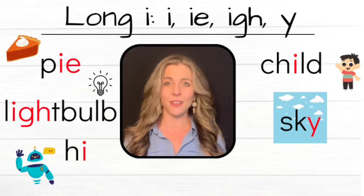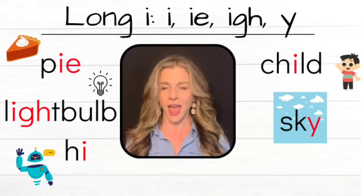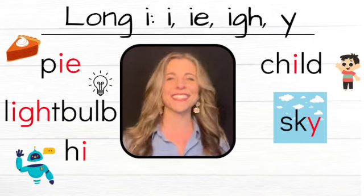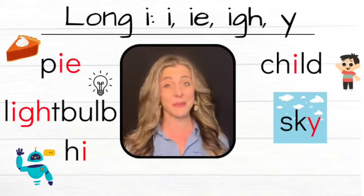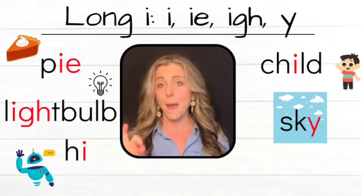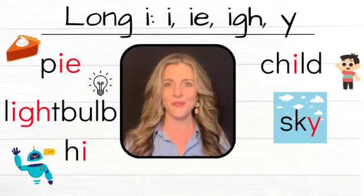We have already worked on many long vowel spelling patterns. Today we focus on long I. I as in pie right there. Is that making you hungry? Because it's making me hungry. I really would like a slice of that pie. P-I. That long I is the I-E right there.